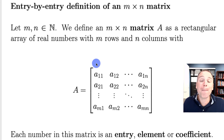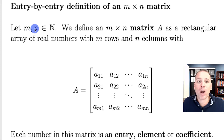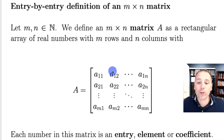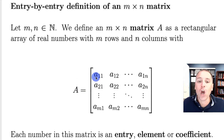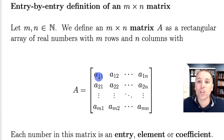Let's jump right in by reviewing the entry-by-entry definition of a matrix. We start with the number of rows M and the number of columns N. We say that an M-by-N matrix A is a rectangular array of real numbers, structured in rows and columns. When we define a matrix using the entry-by-entry definition, we have to physically write out each entry of the matrix.